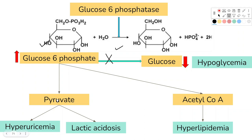Glucose-6-phosphate will also be converted to pyruvate, and in turn will form more amount of lactic acid, causing lactic acidosis. It will also be converted to acetyl-CoA, which is further converted via the lipogenesis pathway, leading to increased amount of lipid and hyperlipidemia.